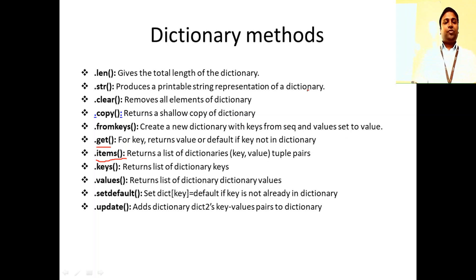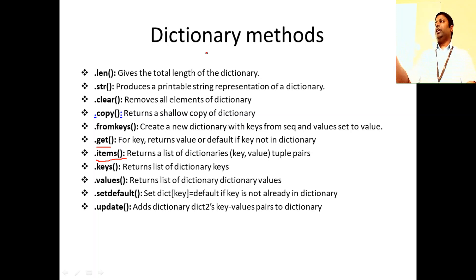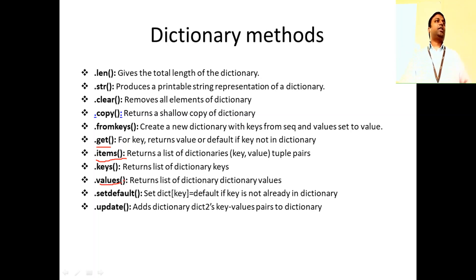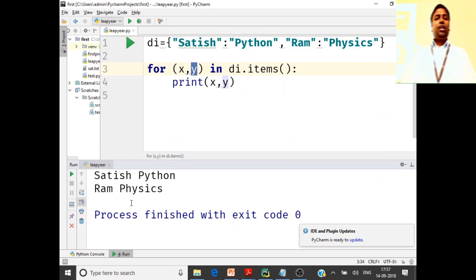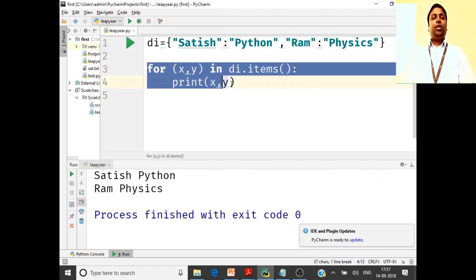dot keys returns all the keys — di.keys gives you all the keys. dot values — di.values gives you all the values in the dictionary. Now dot set_default — this is another interesting function.